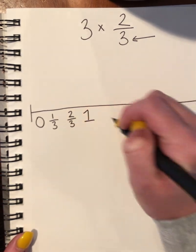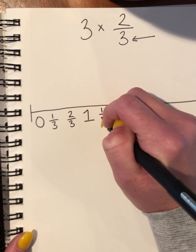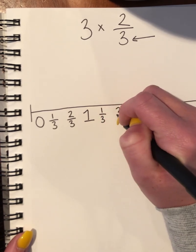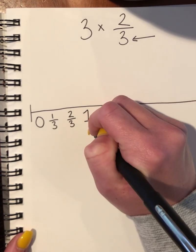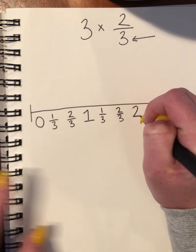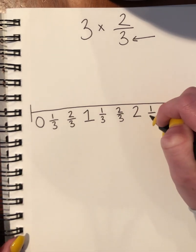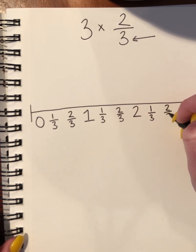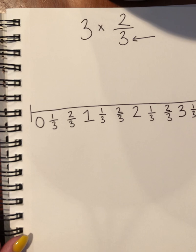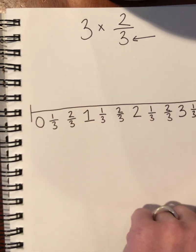Put a 1, then start again: 1/3, 2/3, and then make a 2 whole number. You can do it again: 1/3, 2/3, then a 3 whole, 1/3, 2/3, then a 4. You can keep going because I don't know what my answer is going to be.